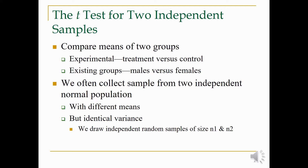When we had dependent groups, we applied the paired sample t-test. When we had only one sample, we applied the one-sample t-test. When we collected data at two points in time, we used the paired sample t-test. Today we are talking about two independent groups or two independent populations. When we compare the means of two independent groups, we apply the independent t-test.